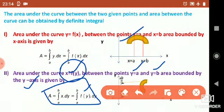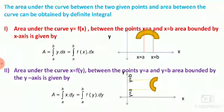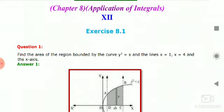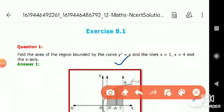These are the two formulas to find the area of the curve y = f(x) between the points x = a, x = b, and y = a, y = b. Now let me begin with Exercise 8.1. Question number one: find the area of the region bounded by y² = x and the lines x = 1, x = 4, and the x-axis.